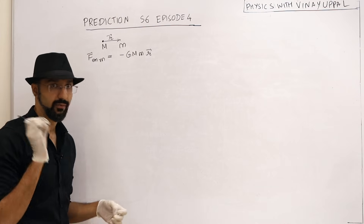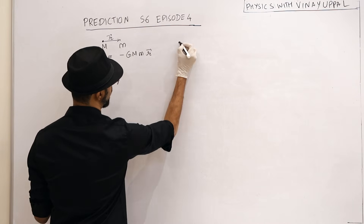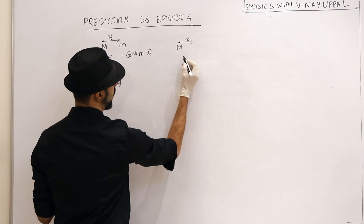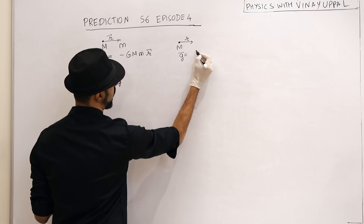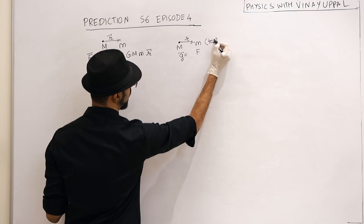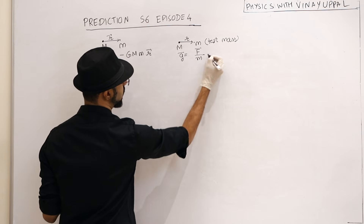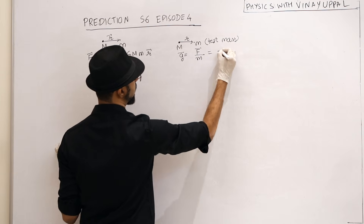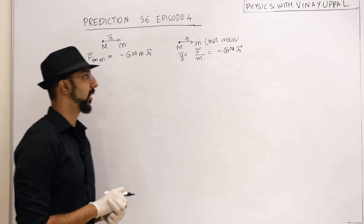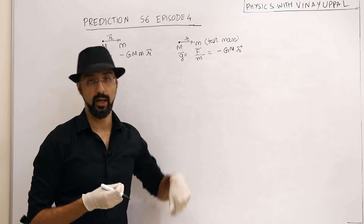First, let's define the gravitational field. If I take a point mass M and at a distance r I want to calculate the gravitational field, it is the force on a test mass divided by the test mass. So if I divide the force by the test mass, I get minus G·M·r vector. The gravitational field due to a point mass capital M is minus G·M·r vector.